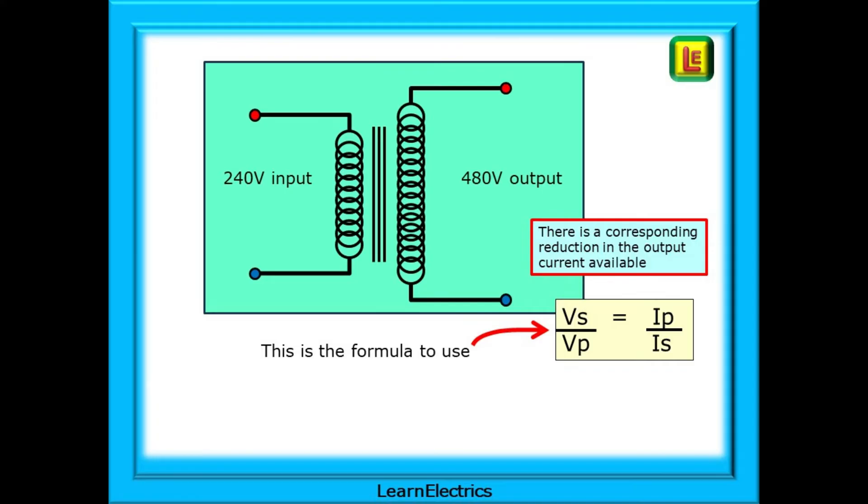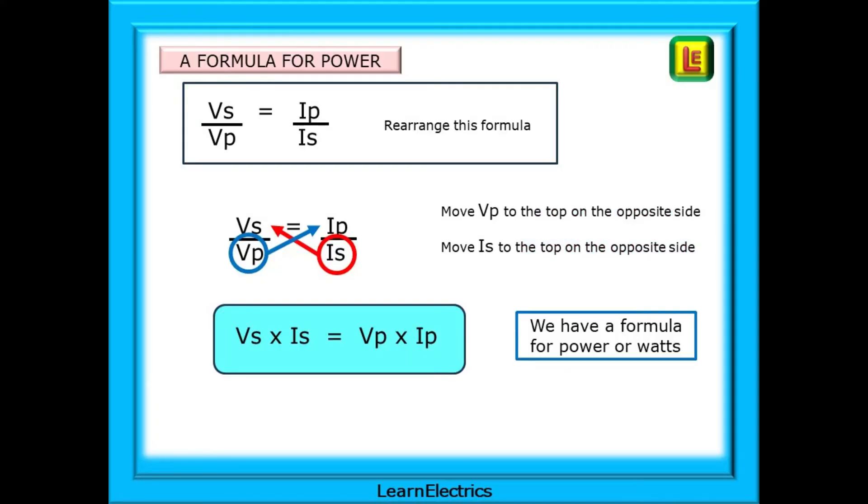Now we can make a formula for power or watts. If we rearrange this top formula what will we get? Start by moving VP to the top on the right hand side and then move IS to the top on the left hand side. We now have VS times IS equals VP times IP, a formula for power or watts.